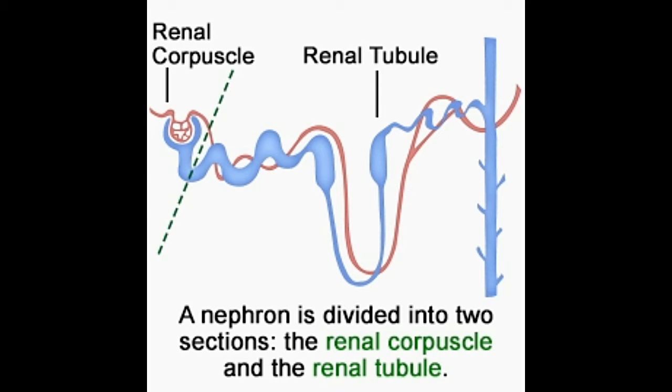It is what makes kidneys one of the five vital organs, along with the heart, the brain, the lungs, and the liver.